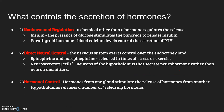What controls secretion of hormones? We have three different control mechanisms. Non-hormonal regulation means that some chemical other than a hormone regulates the release — insulin is one of those, where the amount of glucose in your bloodstream stimulates the pancreas to produce insulin. There's direct neural control, meaning the nervous system is controlling the secretion — remember fight or flight, that panic situation releases epinephrine and norepinephrine, and that is a direct neural control secretion of hormone. And the last one is how hormones secrete hormones — the hypothalamus releases a number of releasing hormones, so those are hormonally controlled hormones.